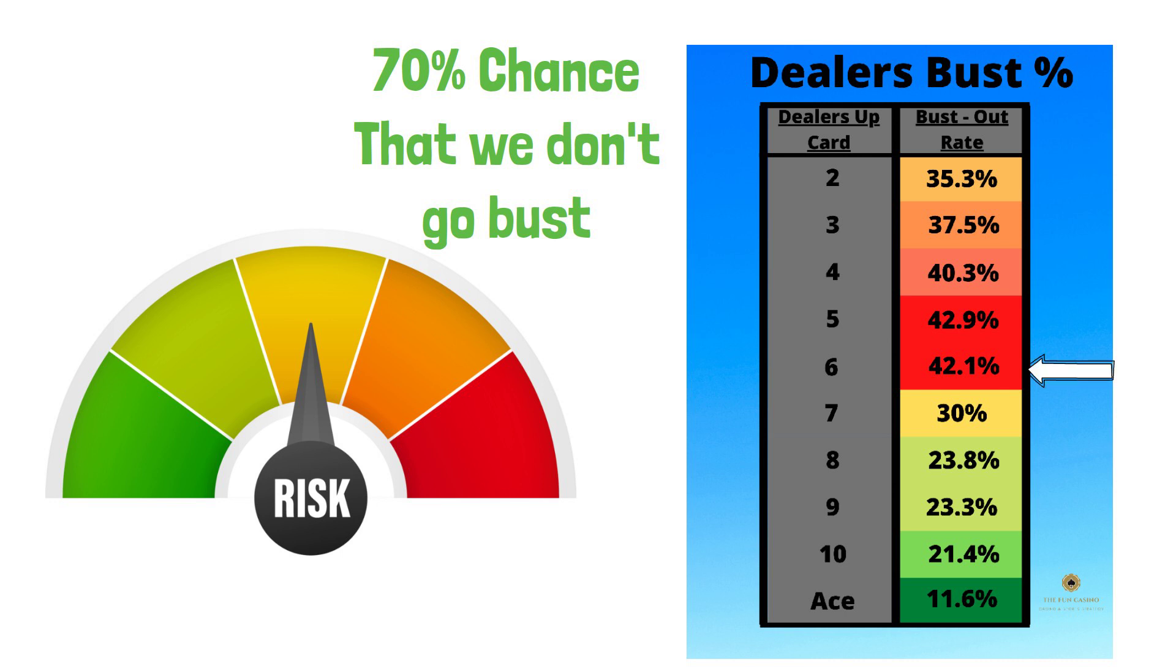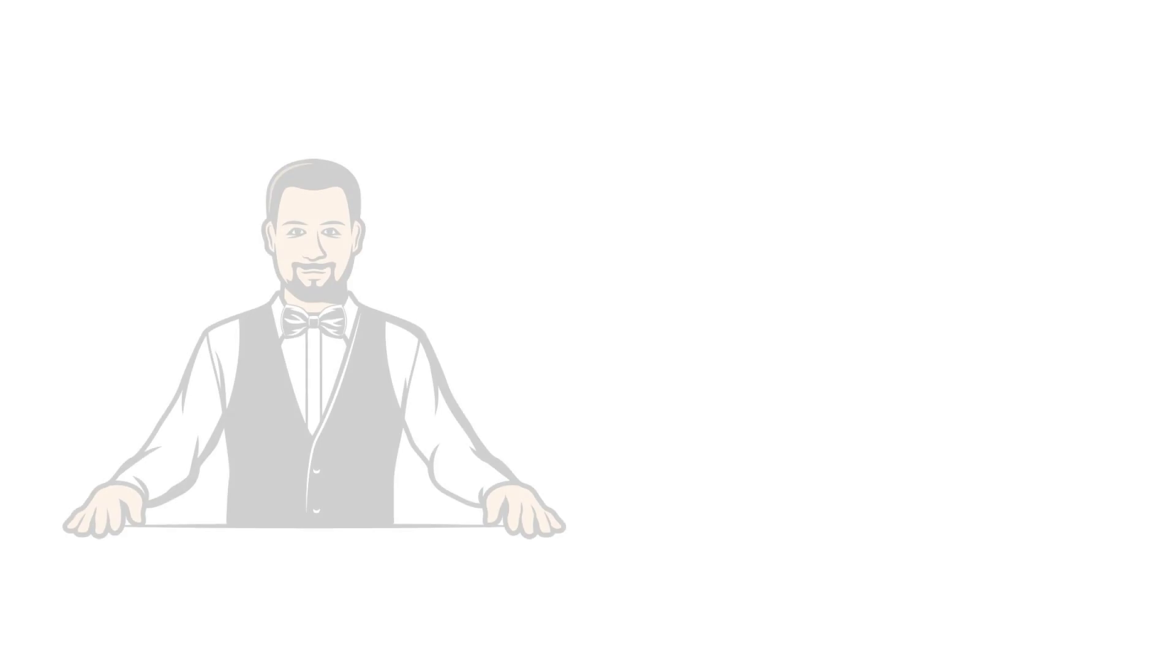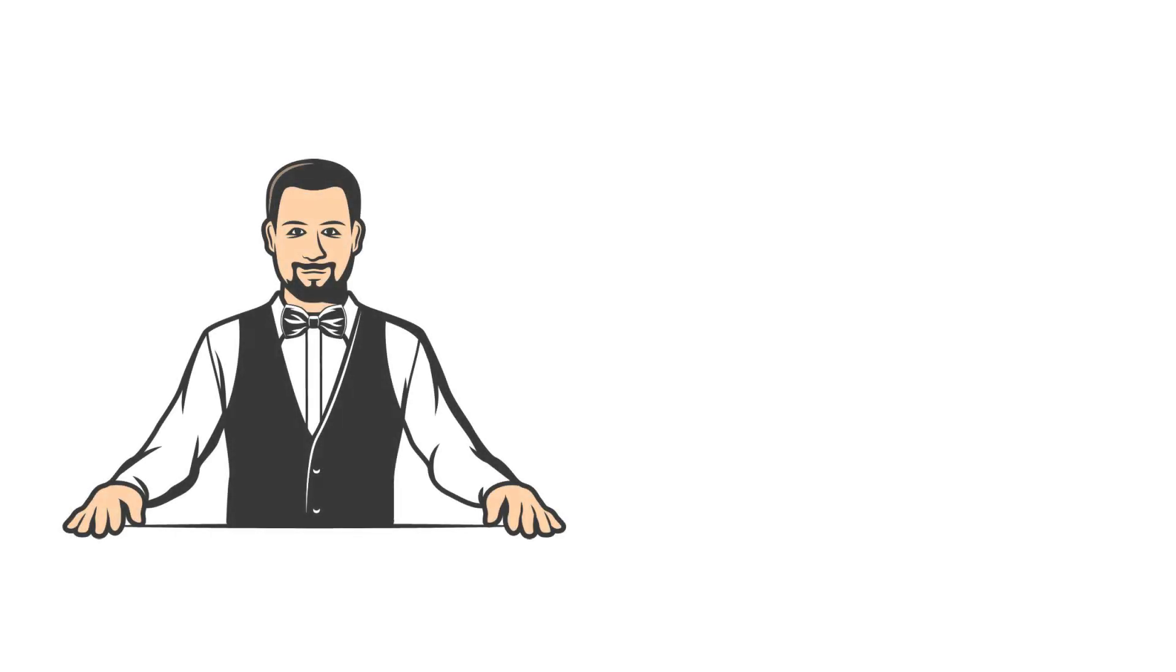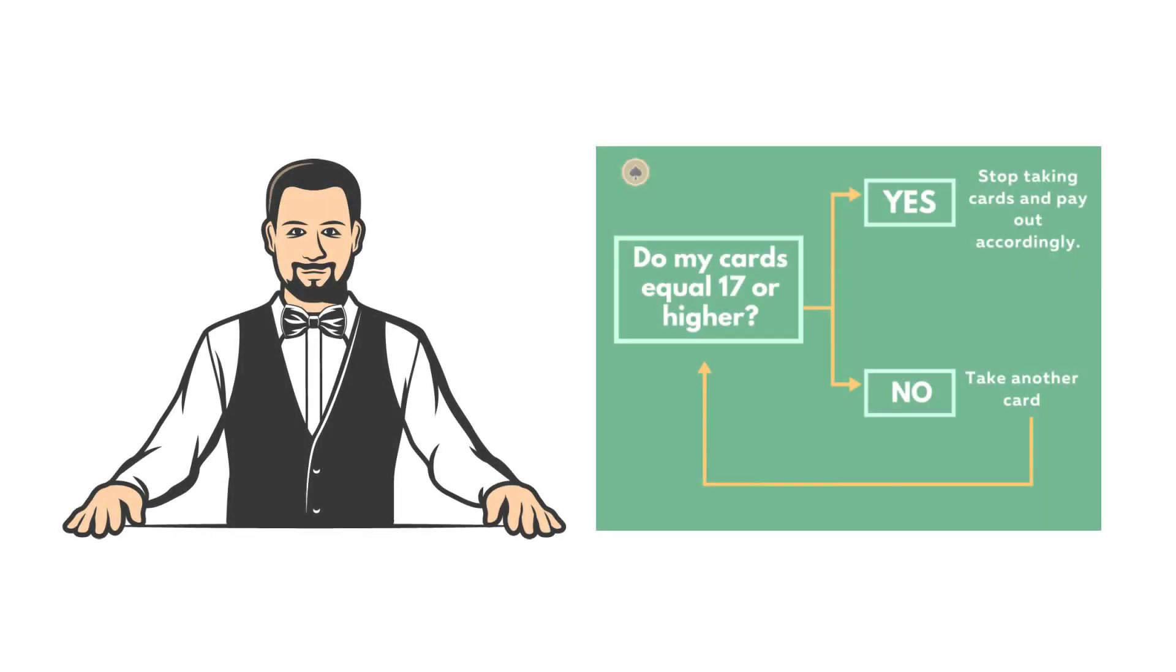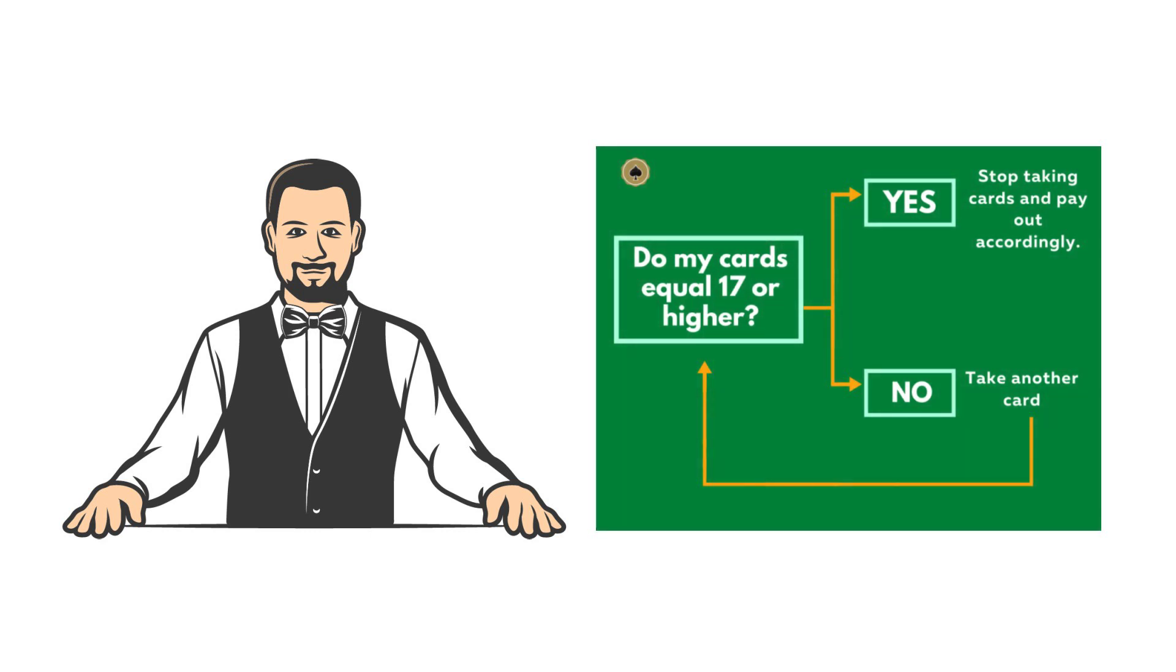Remember, the dealer can only stop taking cards once they have reached a score of 17 or higher. This means unless the dealer's second card is an ace, they will have to take another card. Let's not make it easy for the dealer to escape this situation by going bust ourselves.